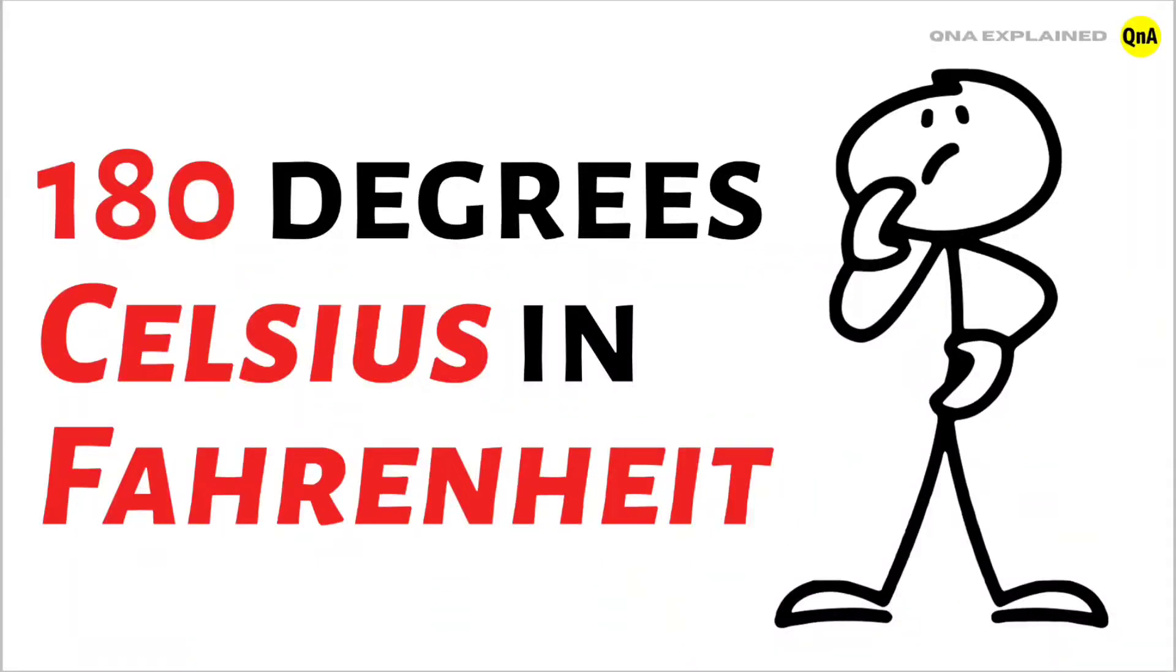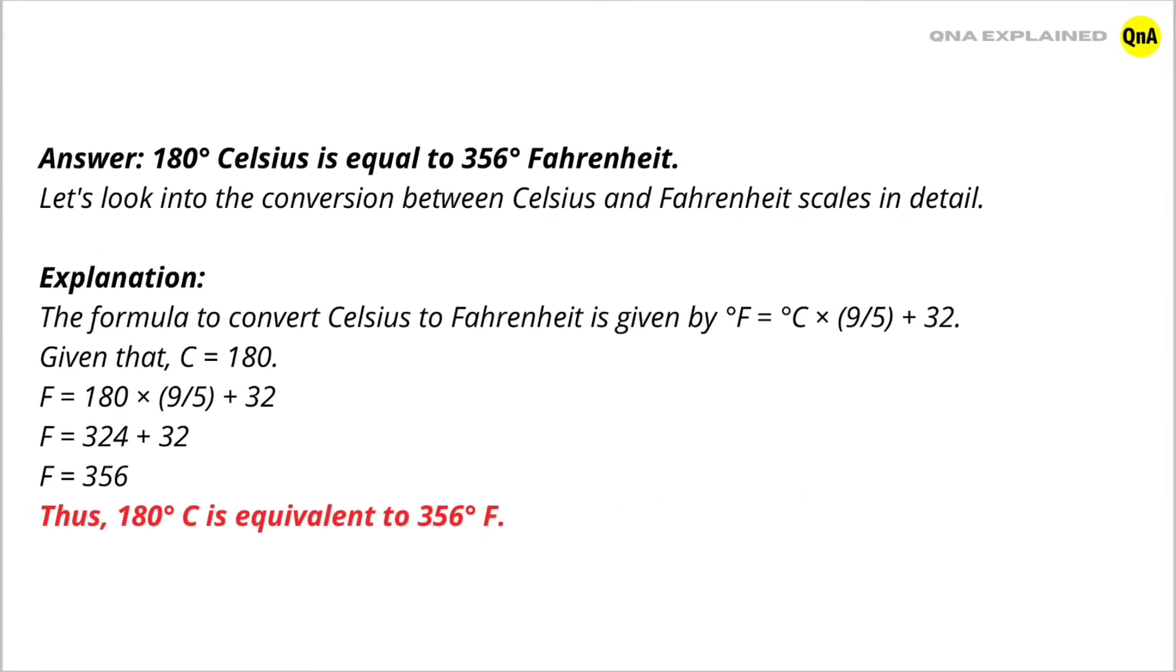180 degrees Celsius in Fahrenheit. Answer: 180 degrees Celsius is equal to 356 degrees Fahrenheit. Let's look into the conversion between Celsius and Fahrenheit scales in detail.